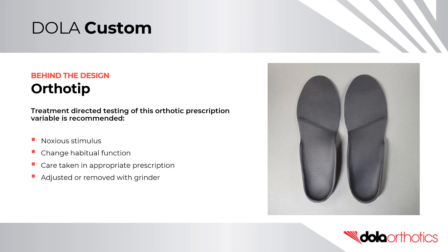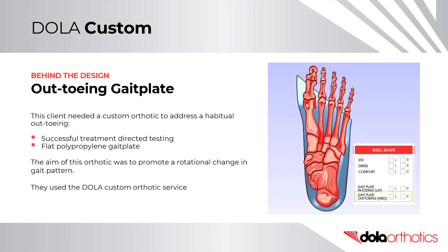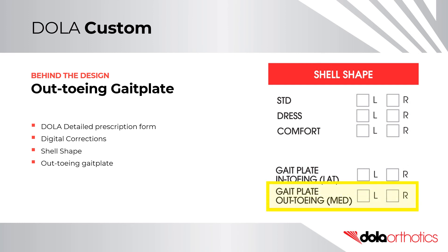Treatment-directed testing is advised prior to prescription. A gait plate can be adjusted or removed with a grinder. Behind the Design: Out-Toeing Gait Plate. This client needed a custom orthotic to address habitual out-toeing. Successful treatment-directed testing was completed prior to prescription with a flat polypropylene gait plate. The aim of this orthotic was to promote a rotational change in gait pattern. They used the Dollar Custom Orthotic service, selecting an out-toeing gait plate in the shell shape section of the digital corrections section on the Dollar Detailed Prescription Form.